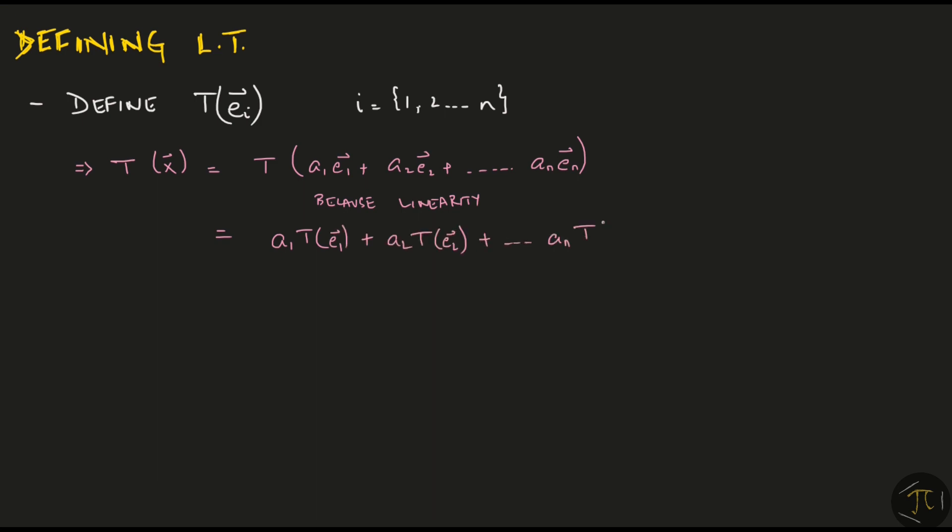From the previous video, we know that in order to define a transformation completely, all we need to know is where the transformation would take the basis vectors. And then if I want to know the transformation of some vector x, I write it as a linear combination of the basis vectors. And then by using the linearity of transformation, break it down in the simple form. Now using the already defined value of t, we can find the exact value.